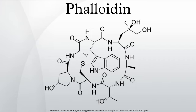Once inside the liver, phalloidin binds F-actin, preventing its depolymerization. It takes time for this process to destroy the liver cells. The kidneys can also take up phalloidin, but not as effectively as the liver. In the kidneys, phalloidin causes nephrosis.